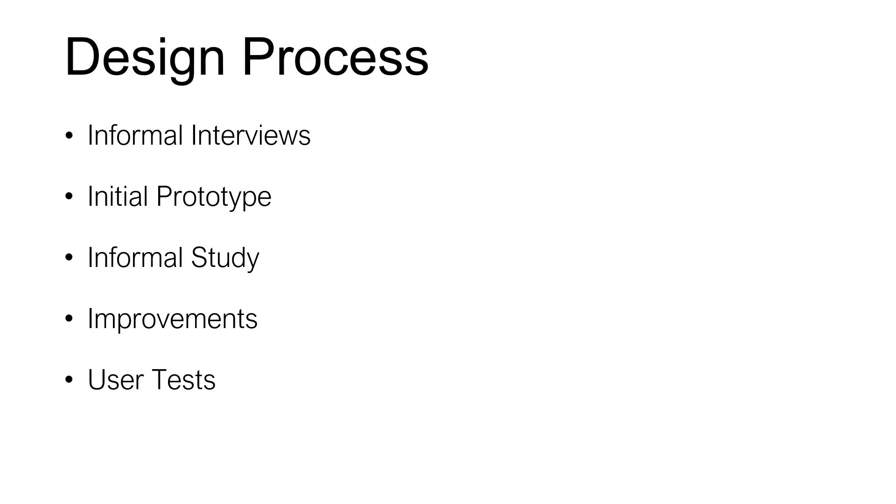We used an iterative and human-centered design process to explore this design space. This process included informal interviews with professional photographers, building an initial prototype to engage users in social interactions, and an informative study to learn more about photography from people and from our robot. We then improved our robot prototype and the way it engaged users and conducted user tests. I will now briefly describe each of these steps and end with a summary of key design recommendations based on our design process.